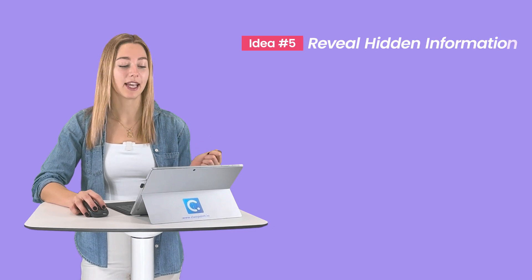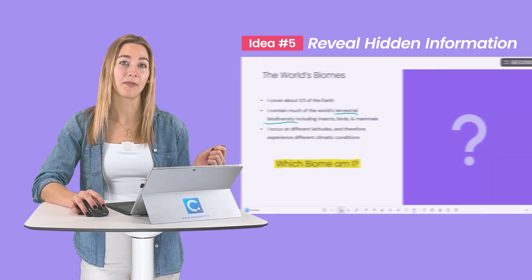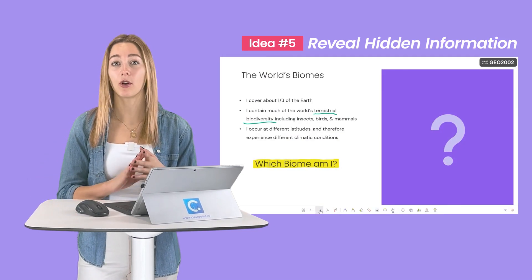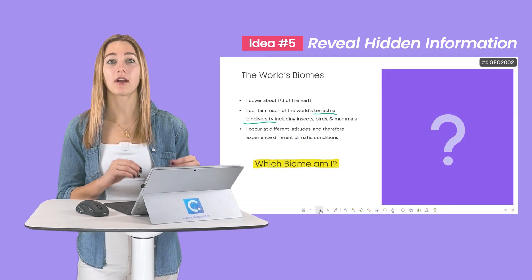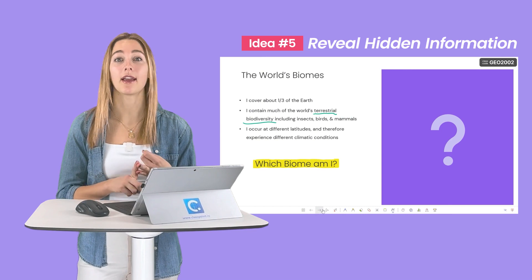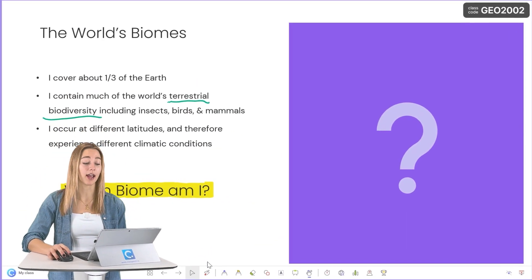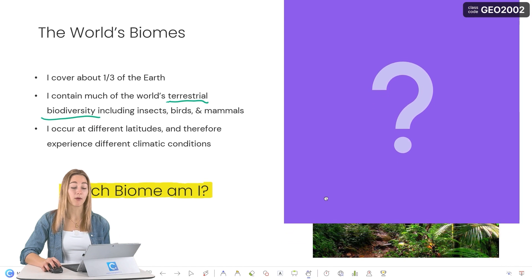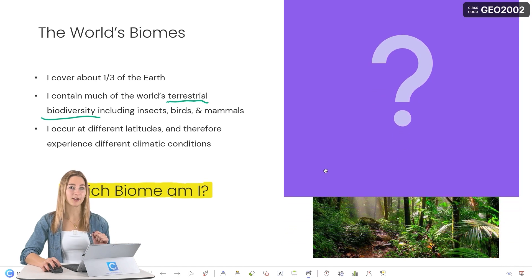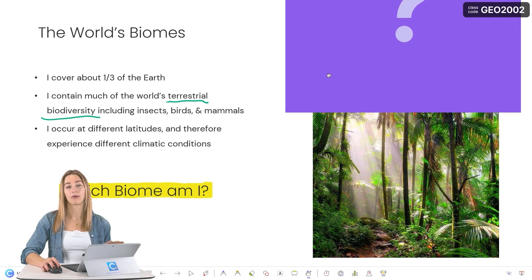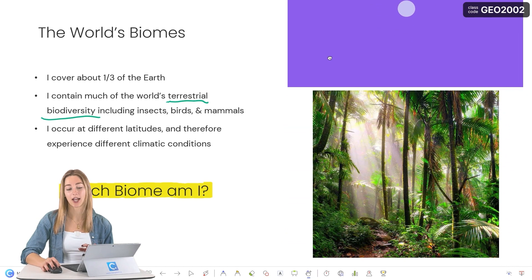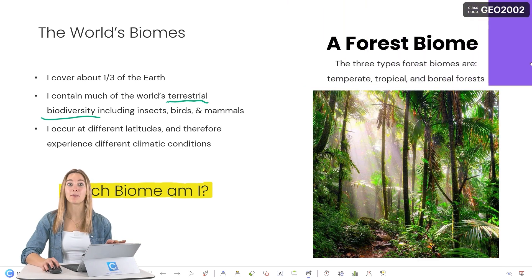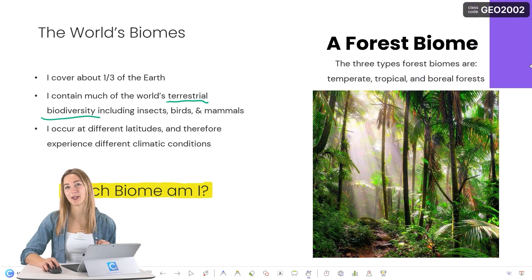Five: reveal hidden information. Place a shape or an image over key pieces of information, answers, or instructions on your slide, and then during the presentation, to keep students' attention and focus at one point in your slide, you can slowly start revealing one portion at a time. This will also help build up anticipation and excitement too.